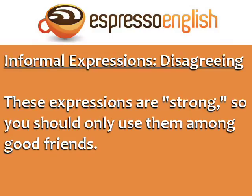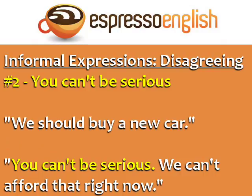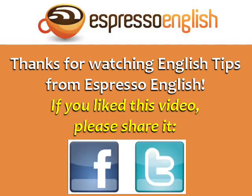Informal expressions for disagreeing — these are strong, so only use them among good friends, not in professional settings. Number one: 'No way.' If someone says 'Titanic was Leonardo DiCaprio's best film,' you can say 'No way — Inception was so much better.' Number two: 'You can't be serious.' For example, if a husband says 'We should buy a new car,' the wife can reply 'You can't be serious — we can't afford that right now.' Thanks for watching English tips from Espresso English. If you liked this video, please share it.